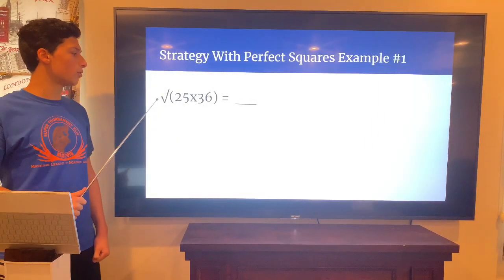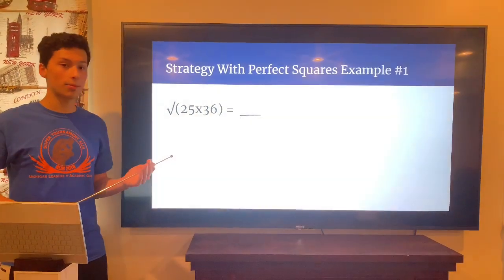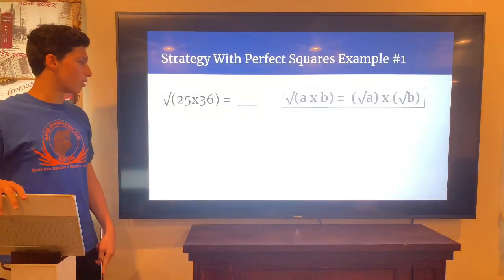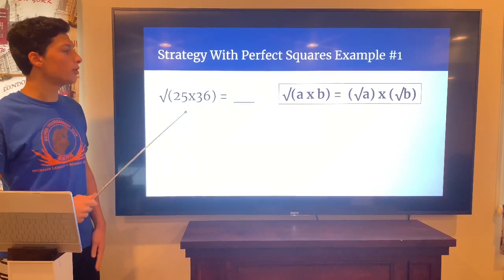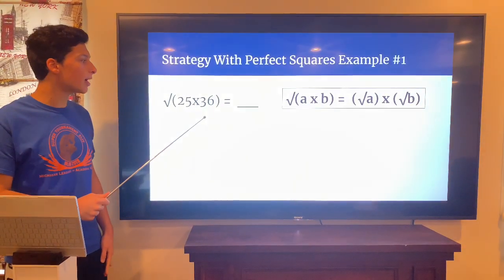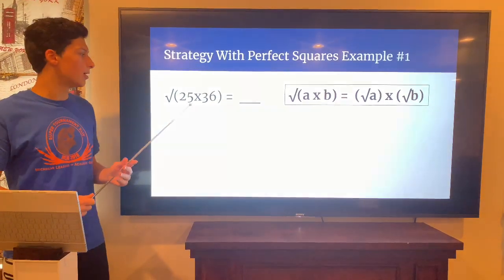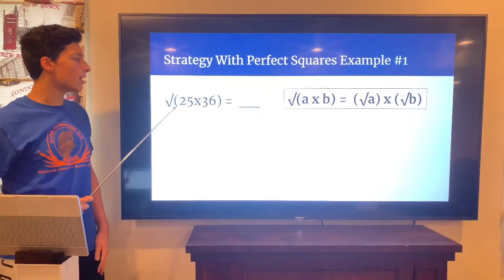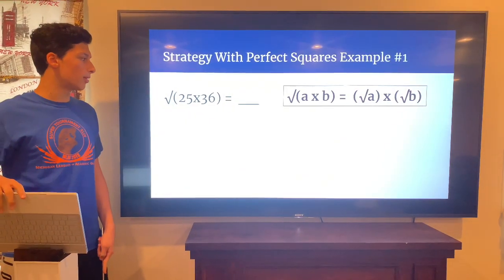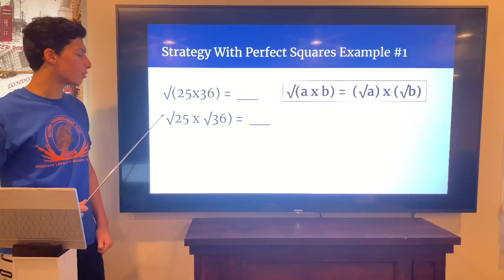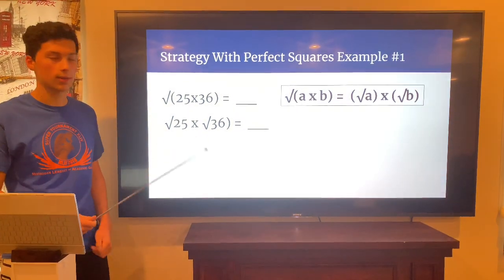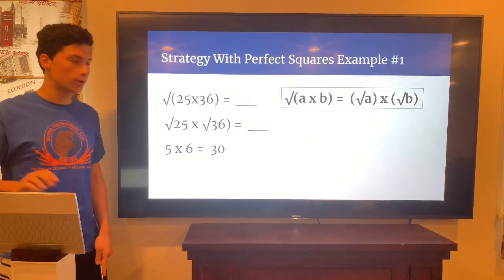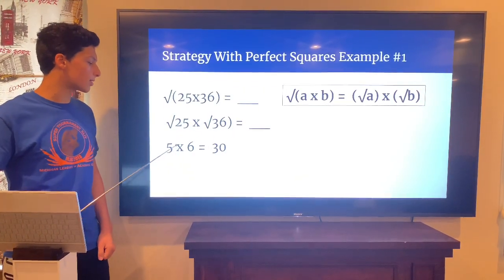Now here's a strategy for perfect squares. Let's say you have the square root of (25 times 36). Using the formula — when you have two things under a square root being multiplied, you can split it into the square root of each component separately: square root of A times B equals square root of A times square root of B. So the square root of 25 is 5, and the square root of 36 is 6. Five times 6 equals 30.